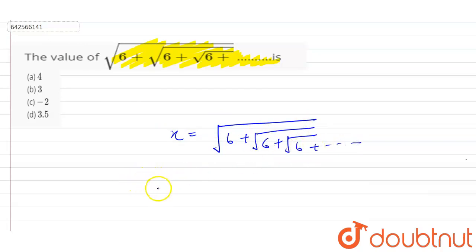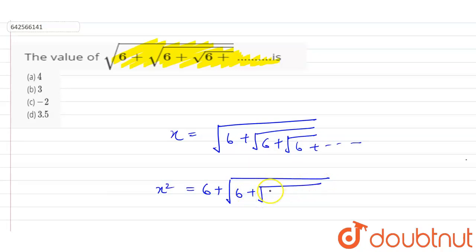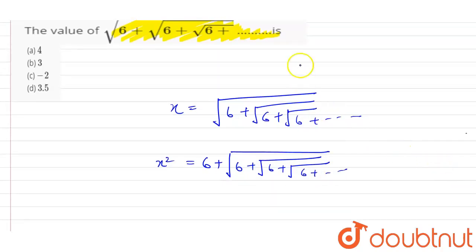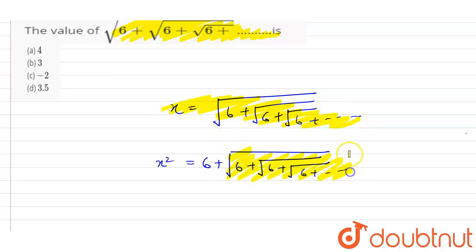Now squaring both sides, this becomes x² = 6 + √(6 + √(6 + √(6 + ...))) up to an infinite number of terms. Now in our equation, we supposed that x = √(6 + √(6 + √(6 + ...))), so that inner expression can also be written as x. So this equation becomes x² = 6 + x.